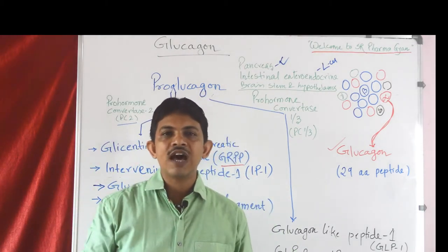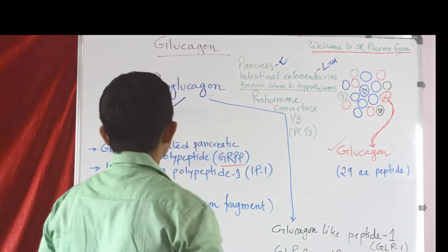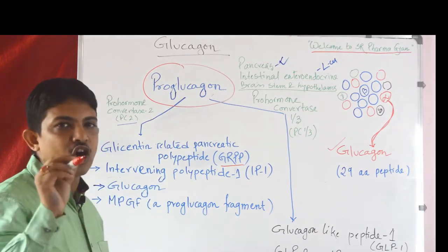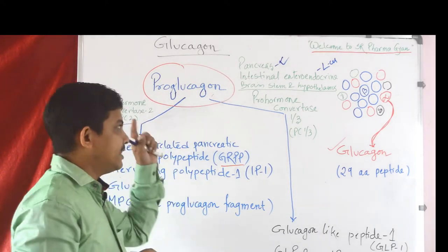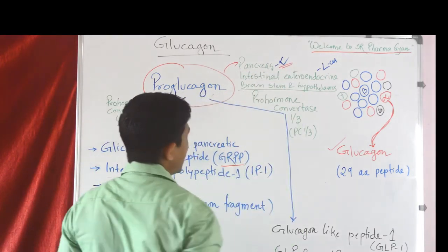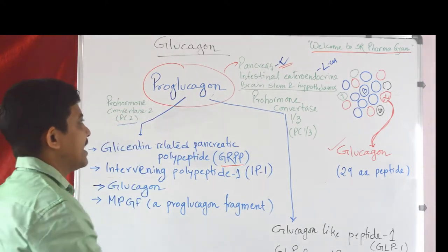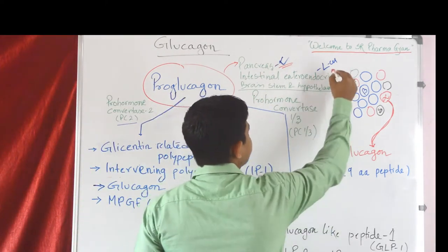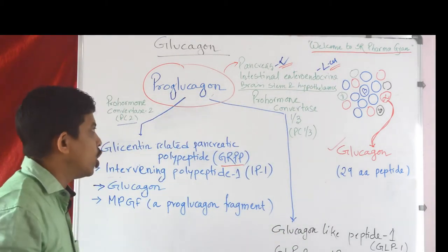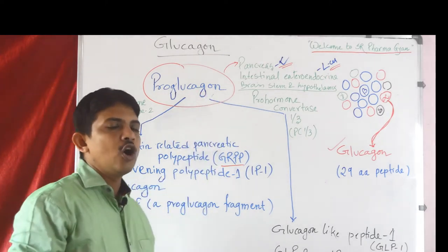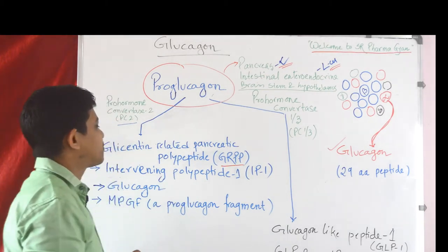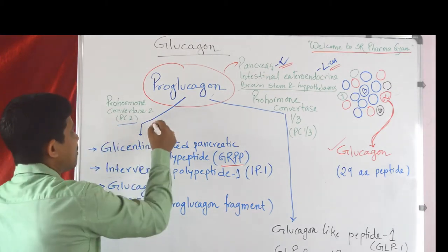Now we'll discuss the synthesis of glucagon. Proglucagon is the precursor of glucagon. Proglucagon is mainly expressed in the pancreatic alpha cells, intestinal enteroendocrine L cells, and in the brainstem and hypothalamus, though in the brainstem and hypothalamus only a lesser extent of proglucagon is expressed.